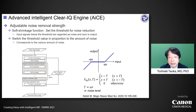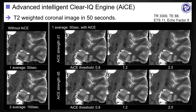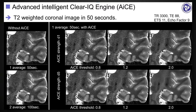One important characteristic of AICE is adjustable noise removal strength. AICE has a soft shrinkage function that sets a threshold for noise reduction. Input signal below the threshold is regarded as noise and zero is output, so the threshold value can be switched in proportion to the amount of noise. The strength of AICE can also be changed. This is an example of a T2-weighted coronal image taken in short acquisition time. By selecting AICE strength and threshold, we can get images with an adequate level of noise reduction for diagnosis, comparable to longer acquisition time images.